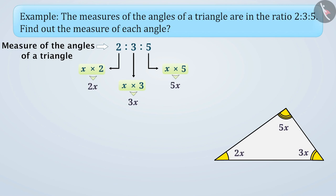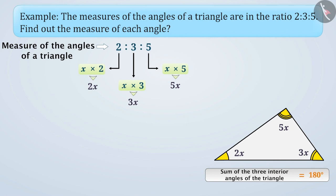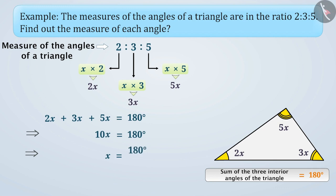According to the angle-sum property of a triangle, the sum of interior angles is 180 degrees. Therefore, 2x plus 3x plus 5x is equal to 180 degrees. That means 10x is equal to 180 degrees, so x is equal to 180 degrees divided by 10, which gives x equal to 18 degrees.